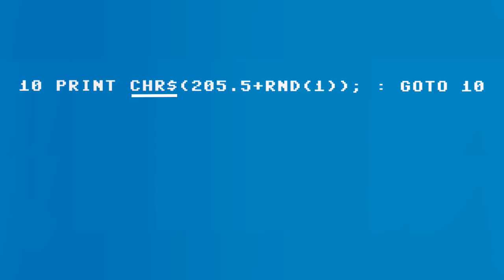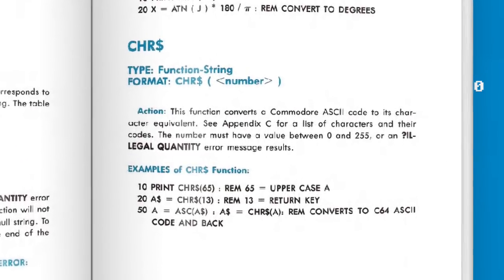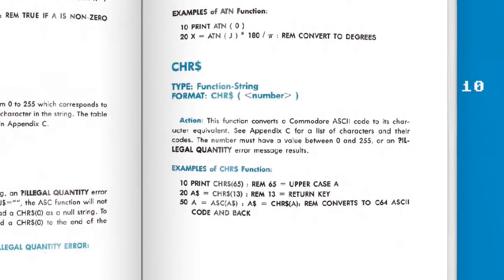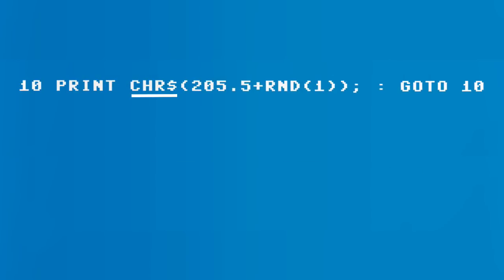Next we have the CHR$ function. Looking at the Commodore user manual: CHR$ takes an integer, which identifies an ASCII code, and converts it to the ASCII character represented by that code. For instance, calling CHR$(65) returns an uppercase 'A.' However, things are a little more complicated here because we're going to be passing numbers above 127 — above the standard ASCII range — so we'll look at what effect that has.